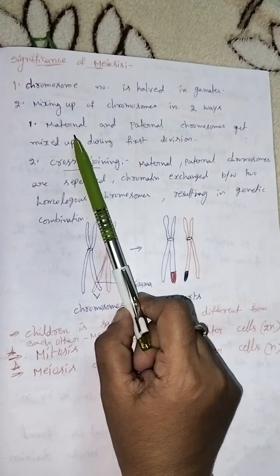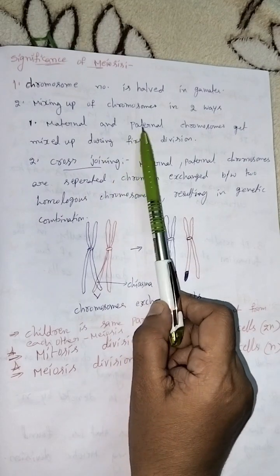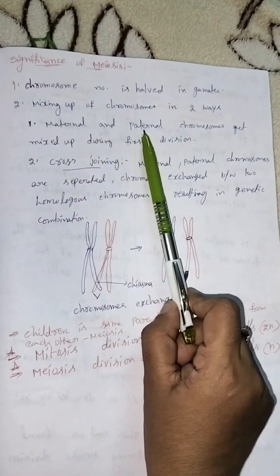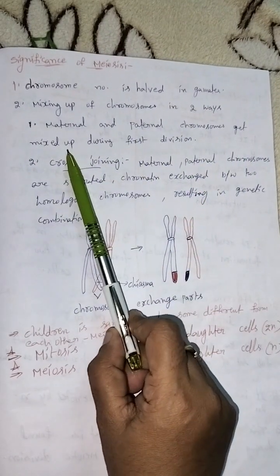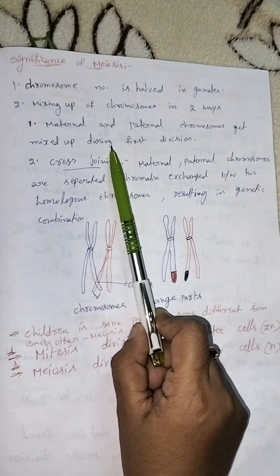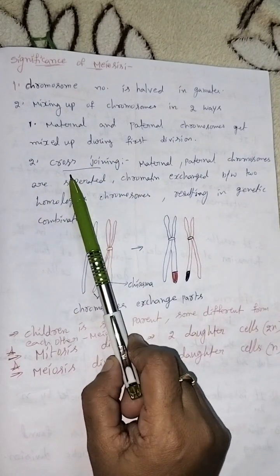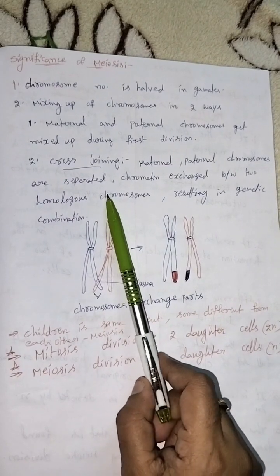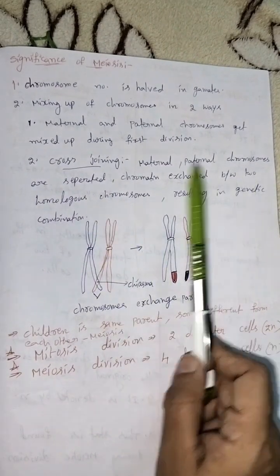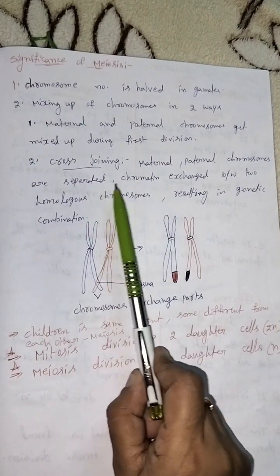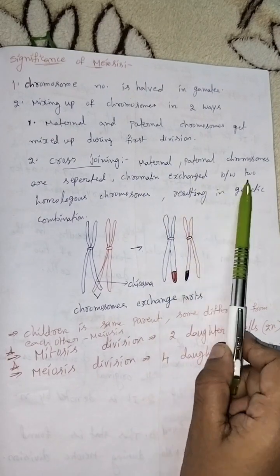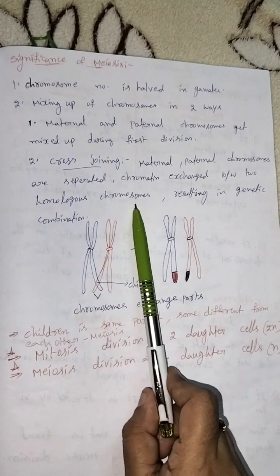Maternal (mother) and paternal (father) chromosomes get mixed up during first division. Second, cross joining occurs. Maternal and paternal chromosomes are separated.